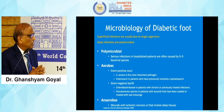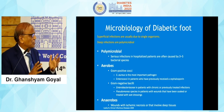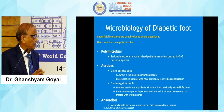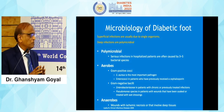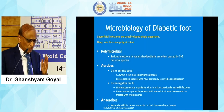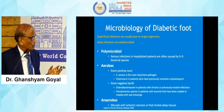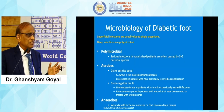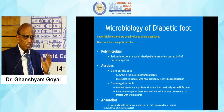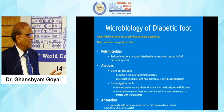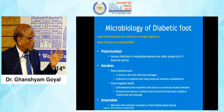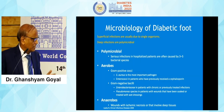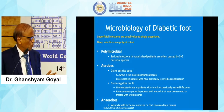Most superficial infections are monomicrobial while deep infections are polymicrobial. The most common organism, as we all know, is Staphylococcus aureus, followed by enterococci, then Enterobacteriaceae, Pseudomonas, and Streptococcus.